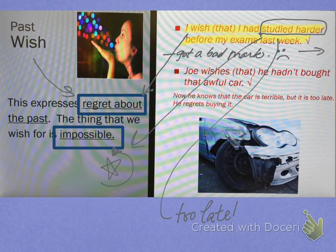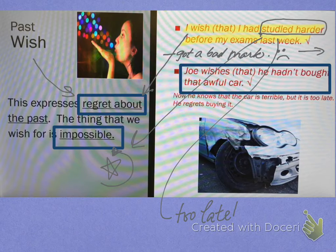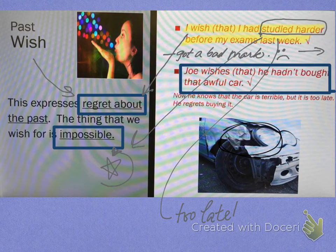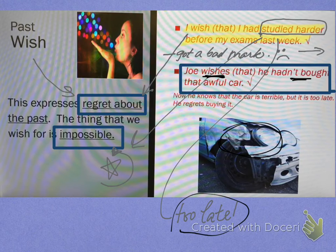There's another example: 'Joe wishes that he hadn't bought that awful car.' Because now he knows — maybe the wheels weren't on properly, or the body wasn't put together very well. There's nothing he can do about it now. The thing that he wishes for — not buying the car — it's over, it's done. He can't do anything about it; it's too late. Just like 'I wish that I had studied harder for my exams' — you can't do anything about it. It's done.